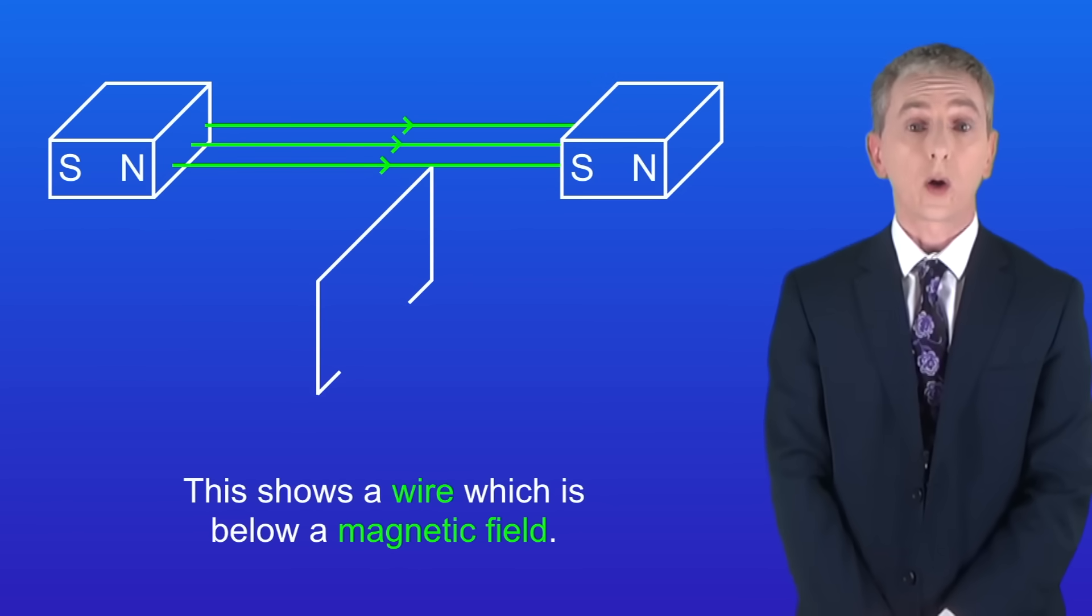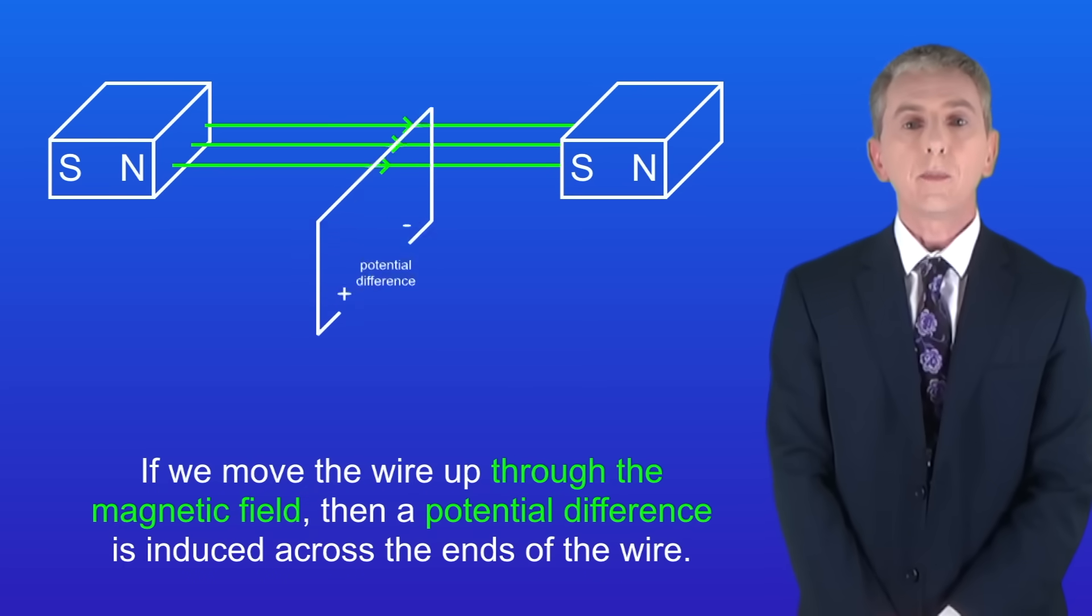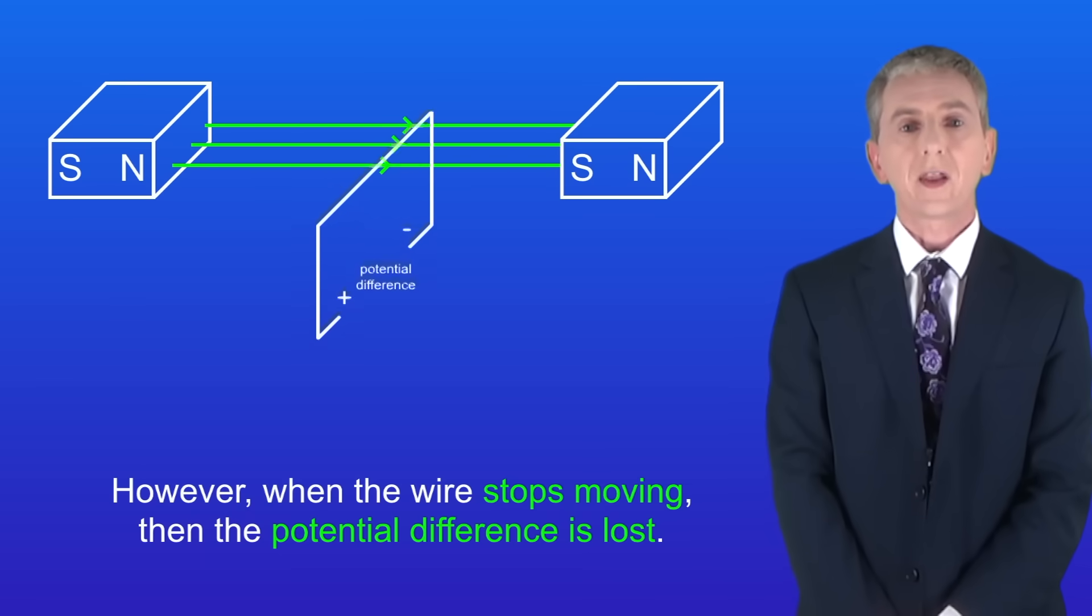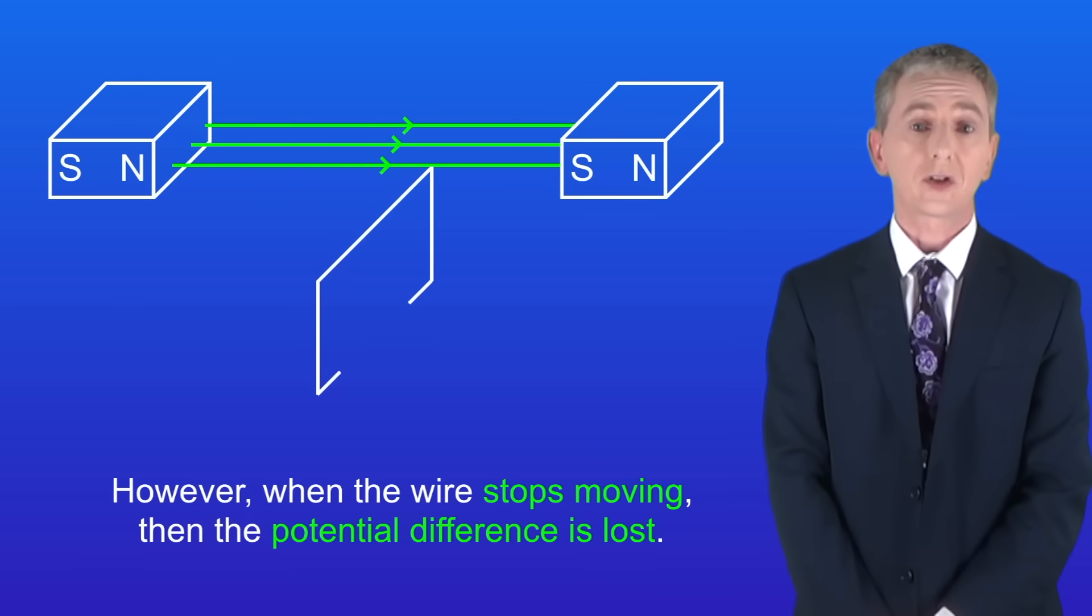I'm showing you here a wire which is below a magnetic field. If we move the wire up through the magnetic field like this, then a potential difference is induced across the ends of the wire. However, when the wire stops moving, the potential difference is lost.